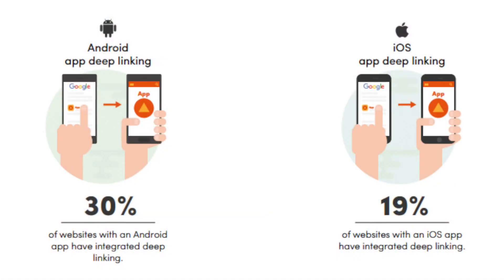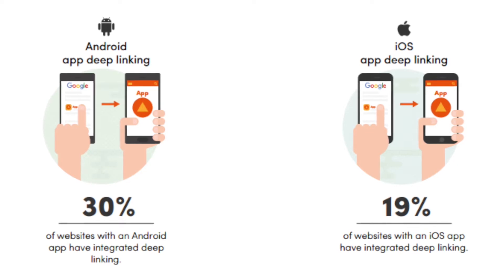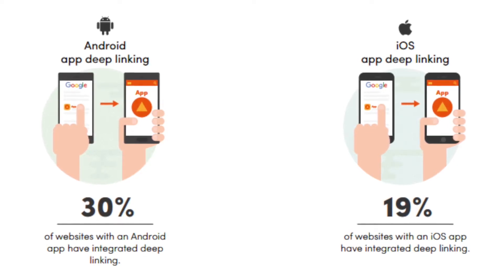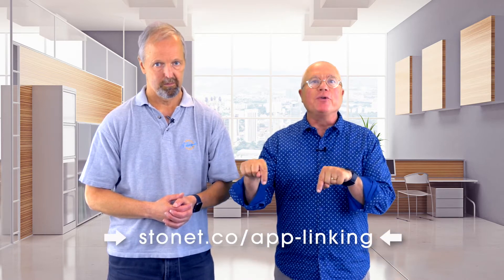Early adopters of app deep link indexing can gain a big advantage. Right now, the percentage of sites with apps that are set up to allow Google app indexing is pretty small — just 30% on Android and only 19% on iOS. So if you want to know how to set up your app for deep link indexing, Eric shares three methods in his Search Engine Land article at the link on your screen.